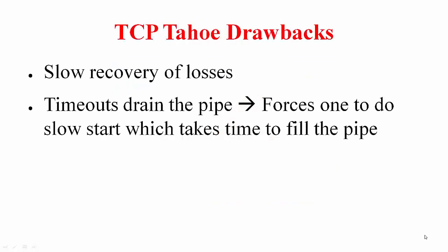We are looking at TCP versions. We already finished TCP Tahoe. TCP Tahoe has some fundamental drawbacks in that it is slow to recover from losses and it acts on timeouts to detect losses. During timeouts the pipe is drained and then you are forced to do slow start, which takes additional time to fill up the pipe.